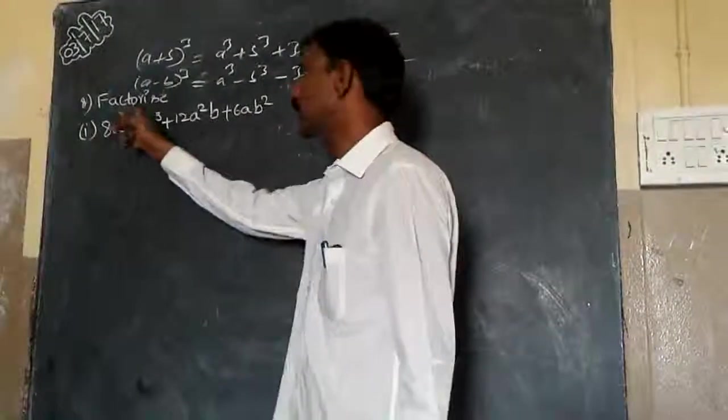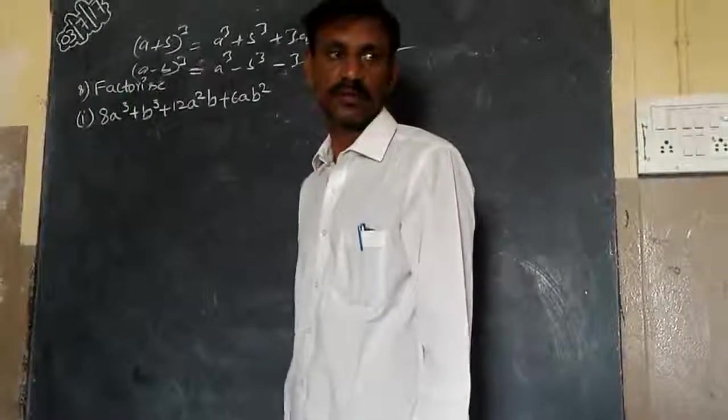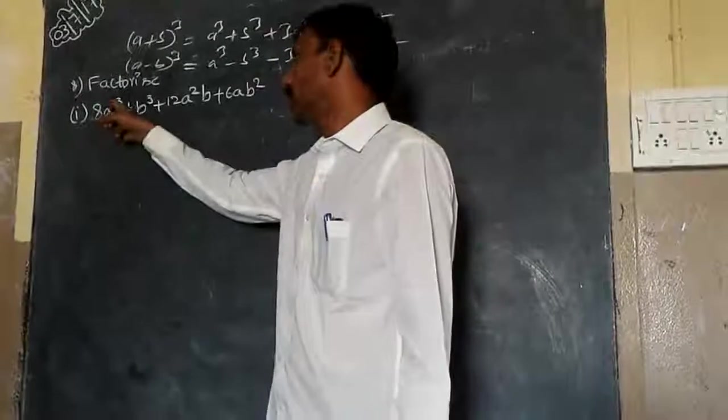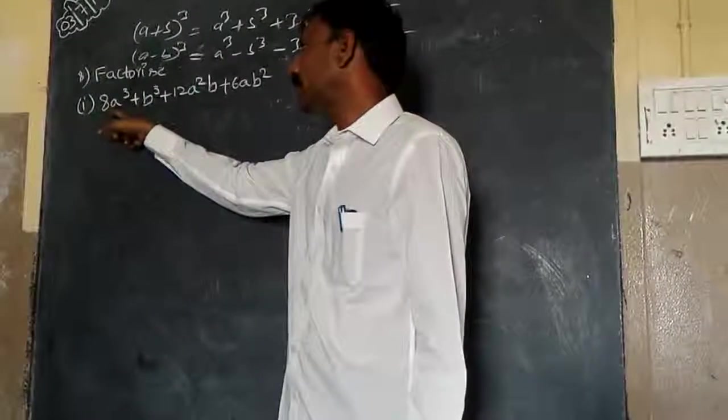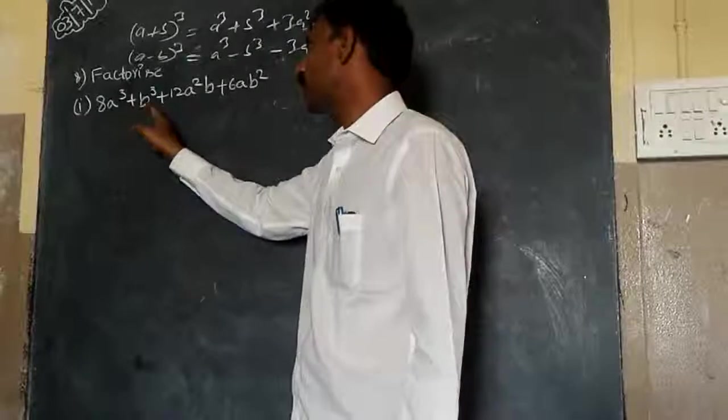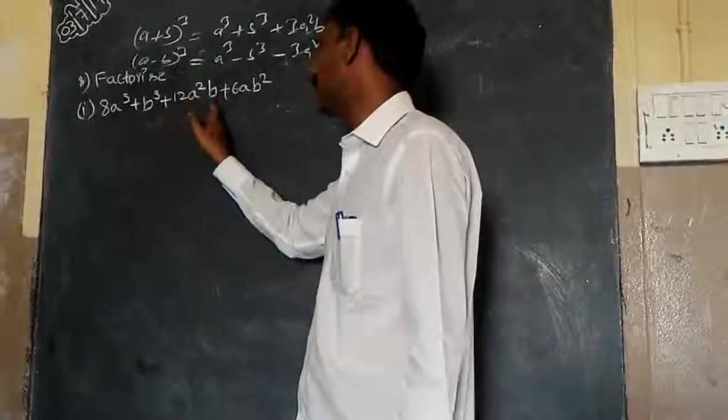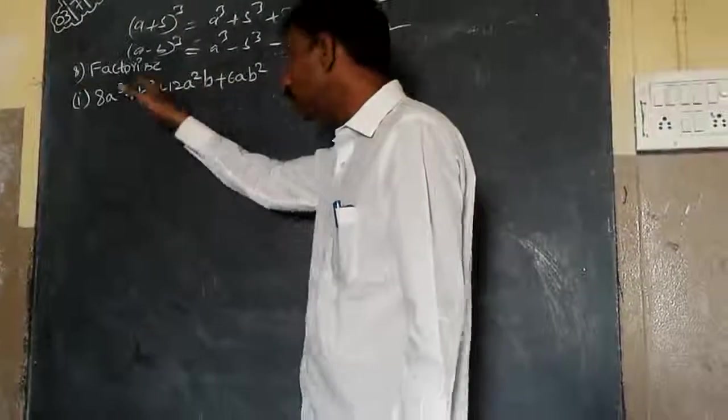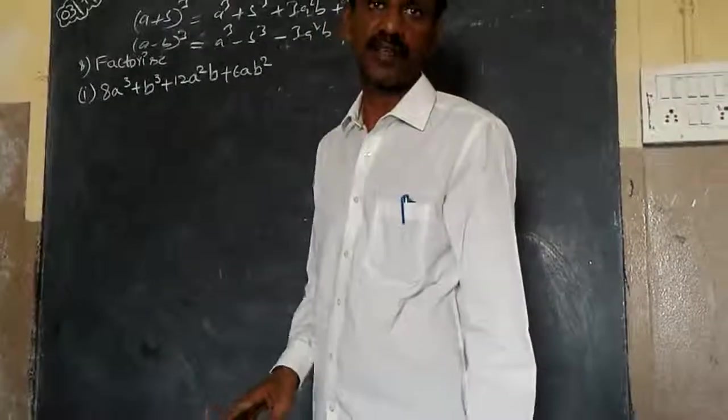See this one, this is the 8th one from your test book. 8a³ + b³ + 12a²b + 6ab². We have to factorize, right?